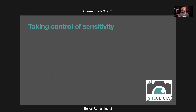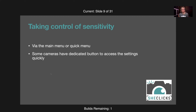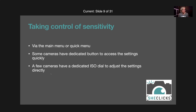There are several ways of controlling sensitivity, depending on your camera. It might be through the main menu, but more commonly it's a quick menu or function menu — you press a button, see an option showing a number like ISO 100, navigate to it and adjust. Some cameras have a dedicated ISO button as a shortcut, and a few cameras have a dedicated ISO dial.